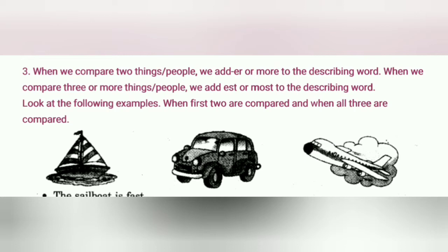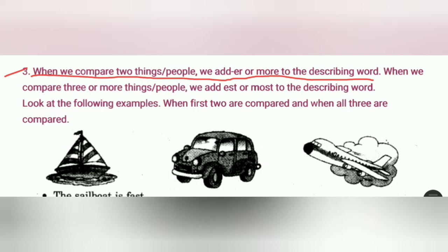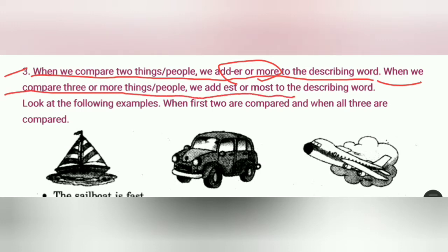When we compare two things or people, we add -er or 'more' to the describing words. When we compare three or more things or people, we add -est or 'most' to the describing words. So, in summary: for two things we add -er or more, and for three or more things we add -est or most.